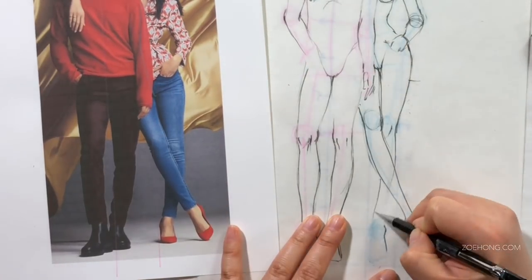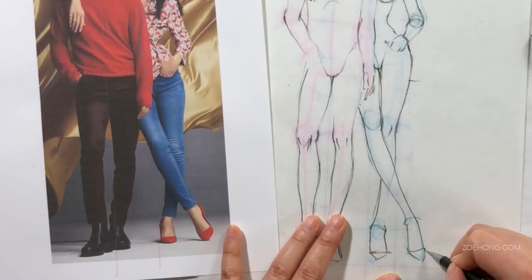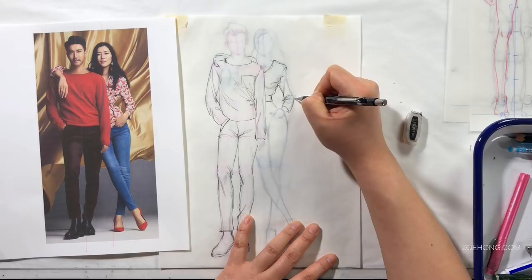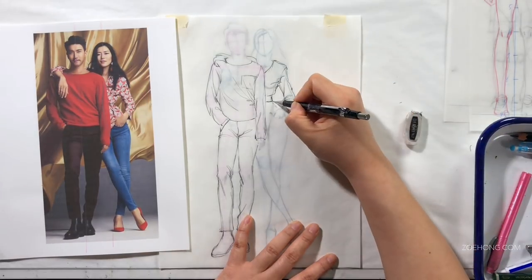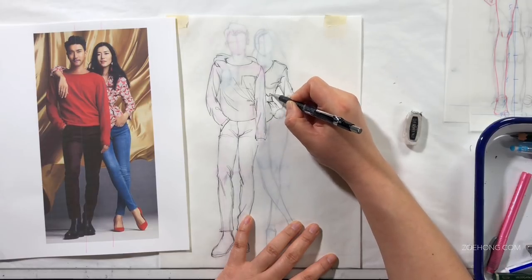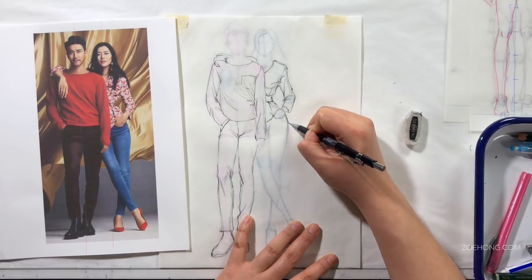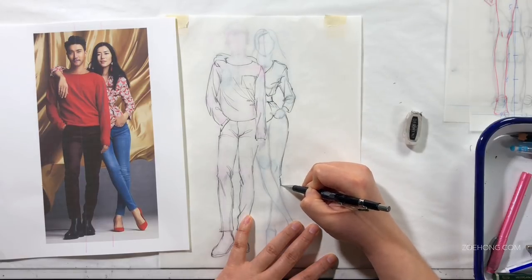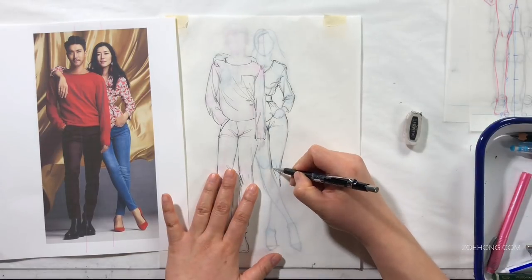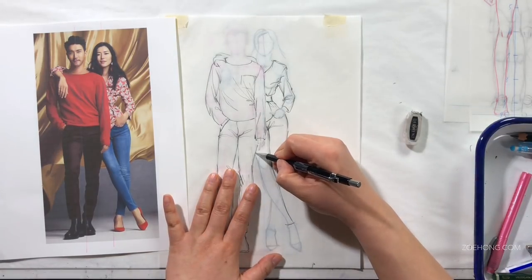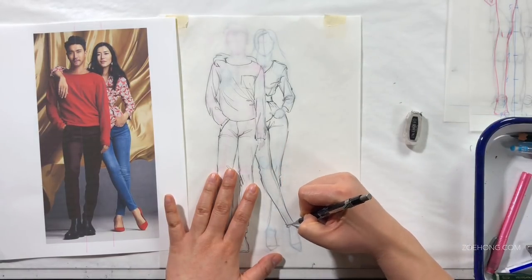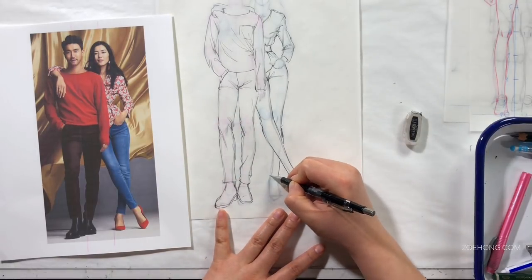And that's it, those are my tips on how to draw two or more people with varying proportions next to and interacting with each other. I would love to see you draw some couples, some trios, some dozens or what have you. Tag me on Instagram, hashtag drawing with Zoe Hong, and let me know how you're putting these principles to use. Again, remember my number one tip is watch your physical overlapping.